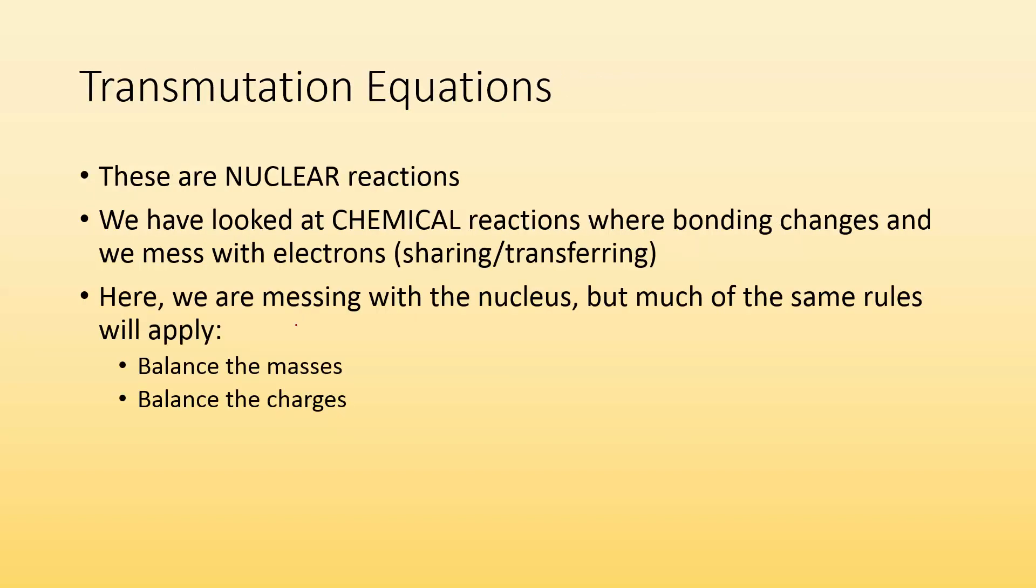These transmutation equations are nuclear reactions. We have looked at chemical reactions where you worry about balancing how many of each element is on each side, but these are nuclear reactions. We're changing the elements. We have transmutation, we're ending up with new elements, so we're not going to be able to do that.